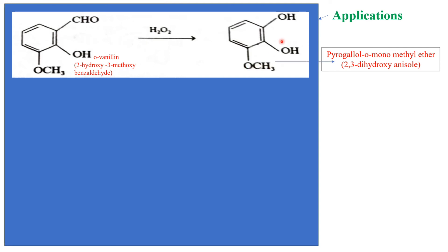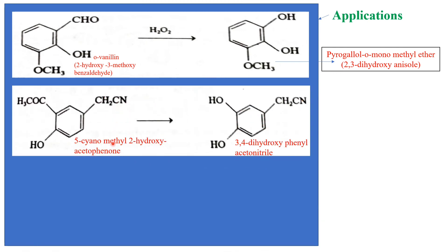Another example: 5-cyanomethyl-2-hydroxyacetophenone is converted to 3,4-dihydroxyphenylacetonitrile. The parent compound is acetophenone, with a hydroxy group at position 2 and a cyanomethyl group at position 5. By addition of hydrogen peroxide, the ketone is converted to a hydroxy group, giving 3,4-dihydroxyphenylacetonitrile.